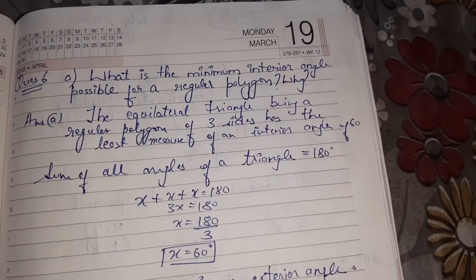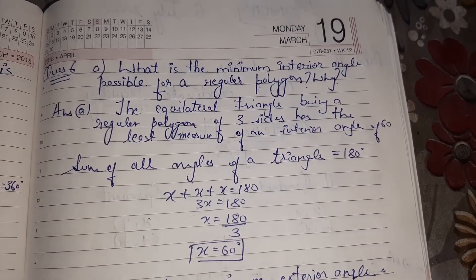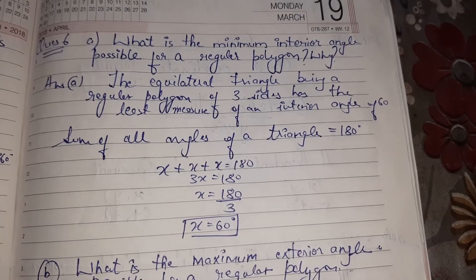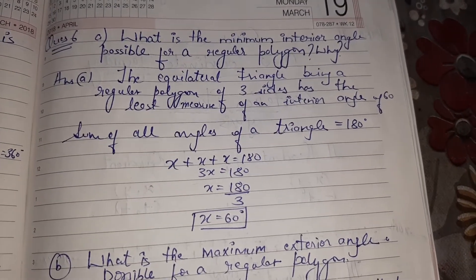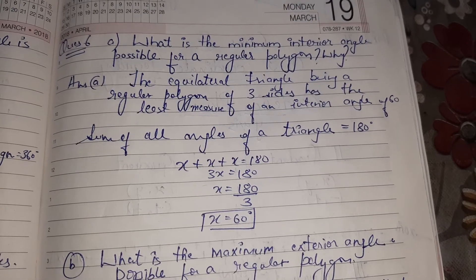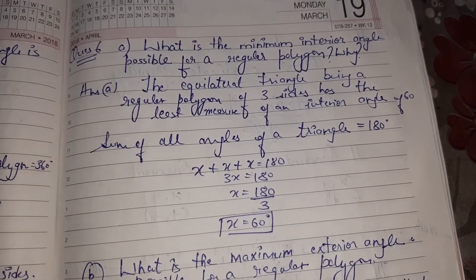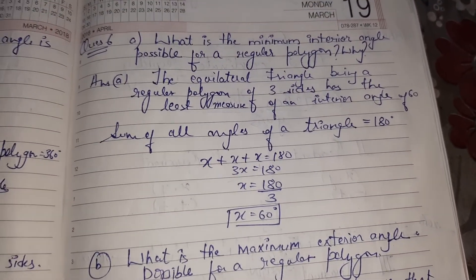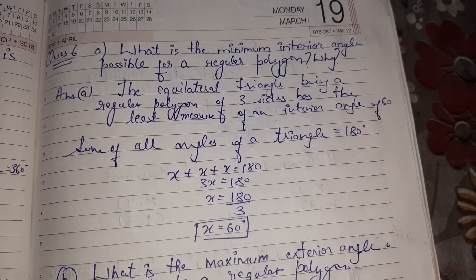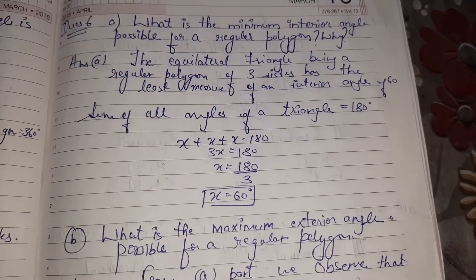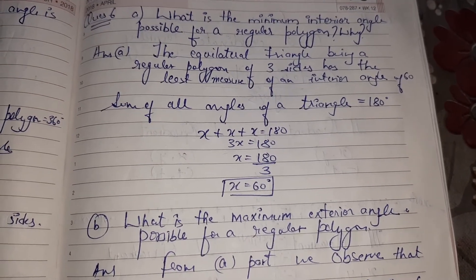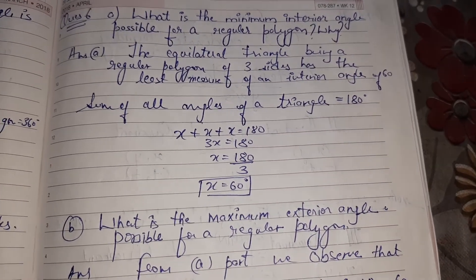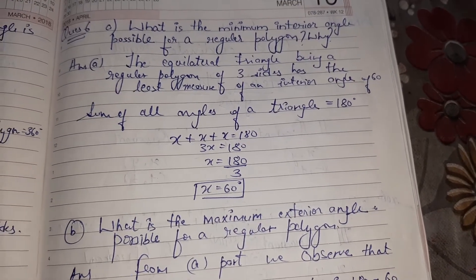What is the minimum interior angle possible for a regular polygon? The equilateral triangle, being a regular polygon of three sides, has the least measure of an interior angle of 60 degrees. It consists of three equal sides and equal angles. The sum of all angles of a triangle is 180, so x plus x plus x equals 180, giving x equal to 60 degrees. This is the minimum interior angle possible for a regular polygon.